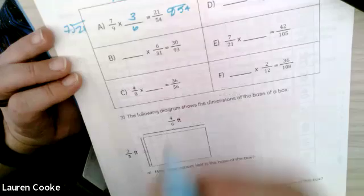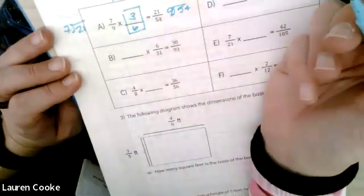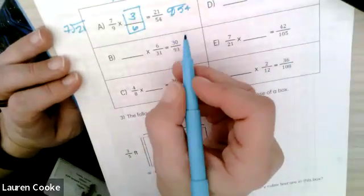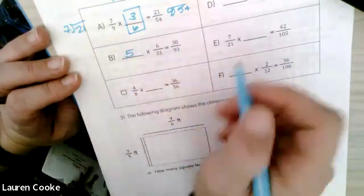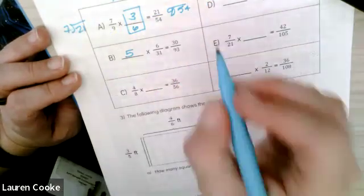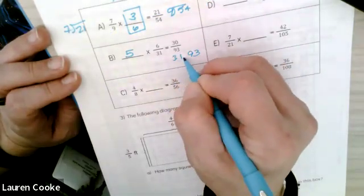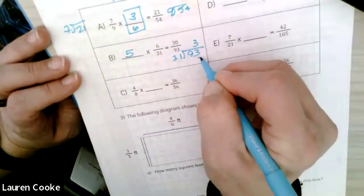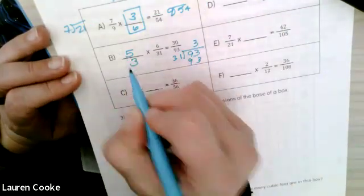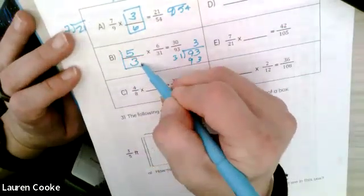And this is the missing factor. Let's go backward here. If I have something times six equals 30, I know that's five. If I have something times 31 equals 93, I'm going to divide that - I'm going to count by 31: 62 - that's going to be three. And so I have five thirds, which is a number greater than one. It's okay.